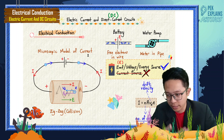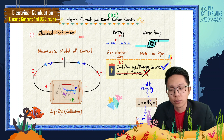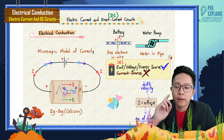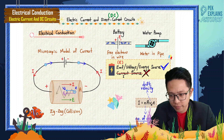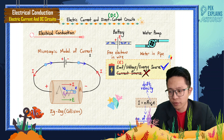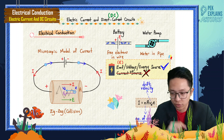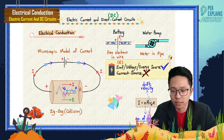What is actually a current? How does current flow? Before we go to the microscopic model of current, we must first understand the function of a battery. Is it the battery that provides the current to flow in the circuit? This is wrong — this is a wrong concept. Battery is not a current source.